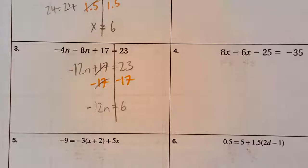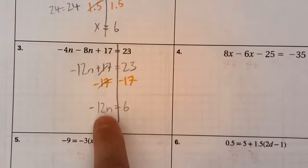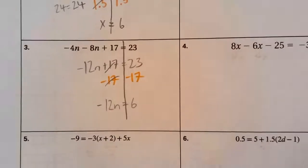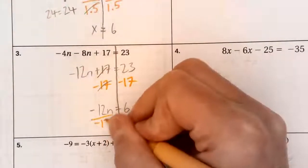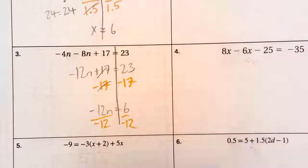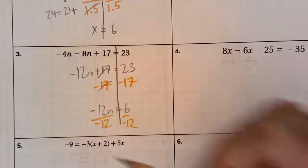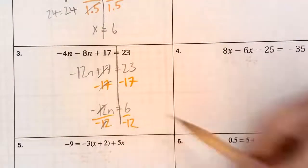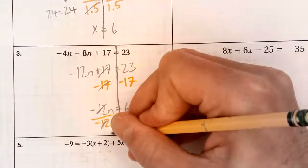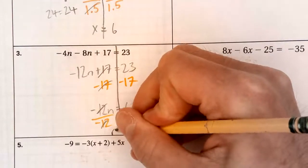Okay. Great. Now it's a single step equation. To undo this multiplication, I'm going to divide. Divide by negative 12. Divide by negative 12. Cancel, cancel, cancel. Leaving me with just n. I have just enough space down there.